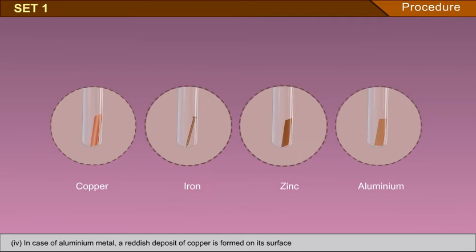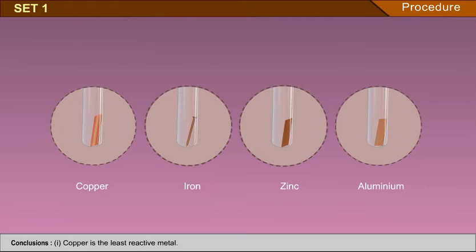In case of aluminium metal, a reddish deposit of copper is formed on its surface. Conclusions: 1. Copper is the least reactive metal. 2. Iron, zinc and aluminium are more reactive than copper.